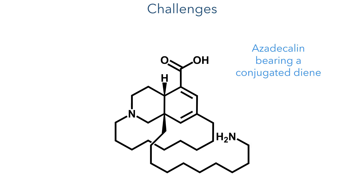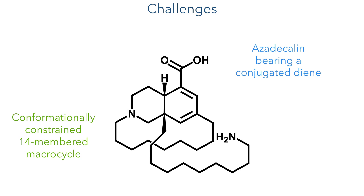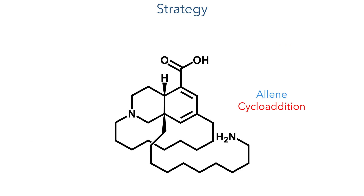The molecule has a rather unusual structure consisting of an azadecalin scaffold bearing a conjugated diene. This is embedded within a conformationally constrained 14-membered macrocycle which contains a quaternary stereocenter bearing a long-chain alkyl amine. The researchers devised an ingenious strategy to make this molecule, using an aryne cycloaddition to make the azadecalin core while at the same time setting the stereochemistry of the quaternary centre. To construct the 14-membered macrocycle, they could use ring-closing alkene metathesis.